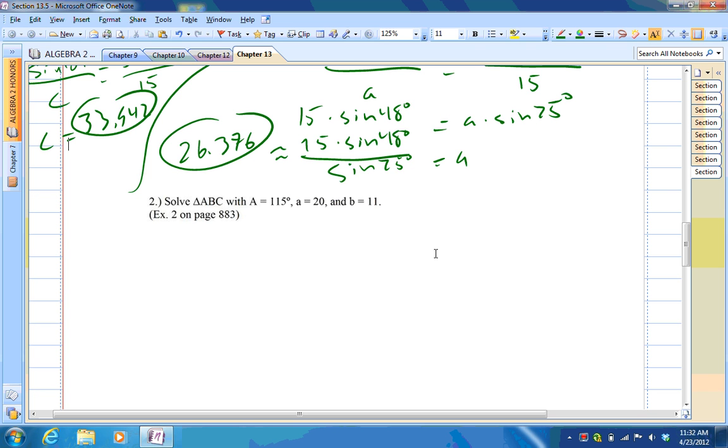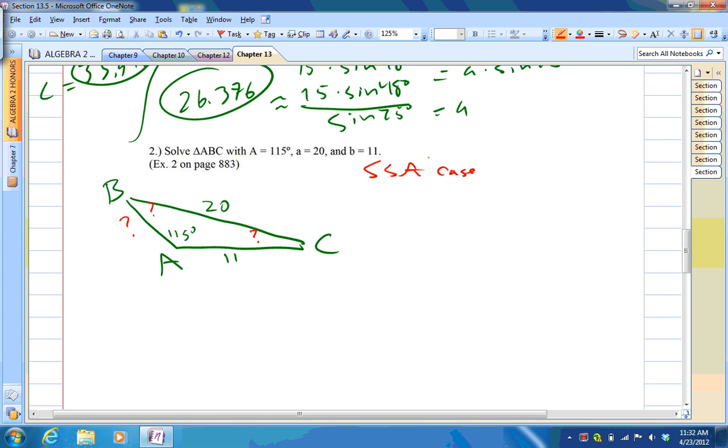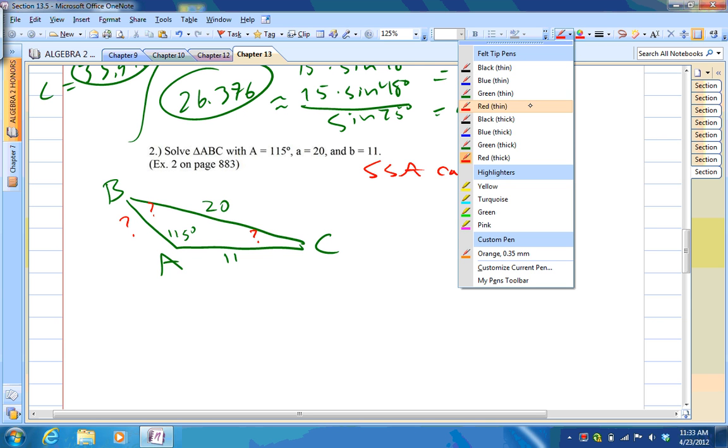So, triangle ABC with angle A 115 degrees, a equals 20 and b equals 11. Okay. So, I might draw this triangle a little more accurately this time. We'll call this A, we'll call this B, we'll call it C. That's 115 degrees, side A is 20, side B is 11. So, we do not know this side, we do not know that angle, nor do we know that angle. Now, this is part of the SSA case. That's the ambiguous case. I'll explain why it's ambiguous when we're in class during block one.